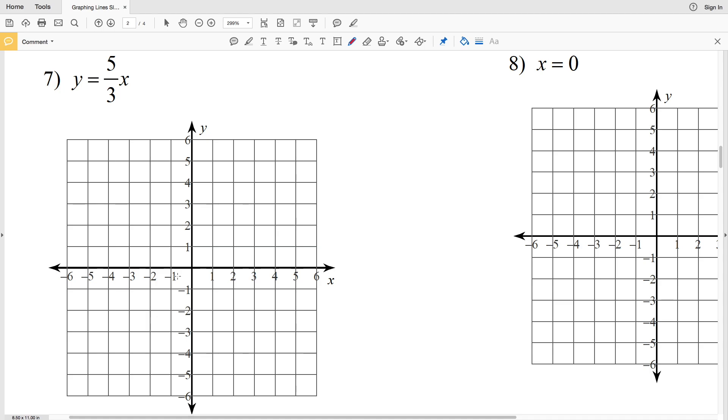So picking up with number seven we have y equals five-thirds x. We know that our slope m is five-thirds and we know that our b or our y-intercept is zero. So when x is zero, y is also zero since that's our y-intercept. Then using slope which is rise over run, we're going to go up five and we're going to go to the right three to reach our next point on the line.